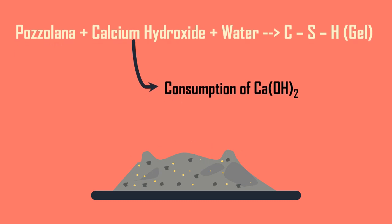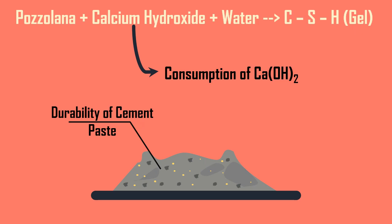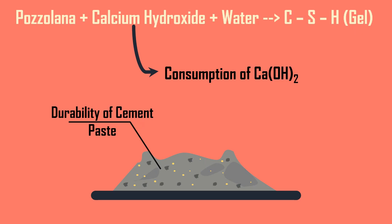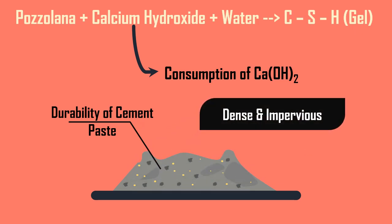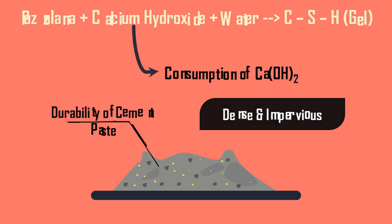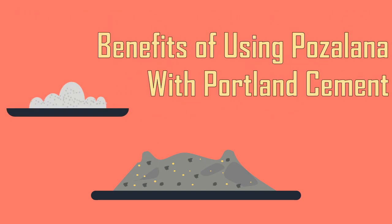The reduction of Ca(OH)₂ improves the durability of cement paste by making the paste dense and impervious. It has been proved that the best pozzolana in optimum proportions mixed with Portland cement has the following benefits.